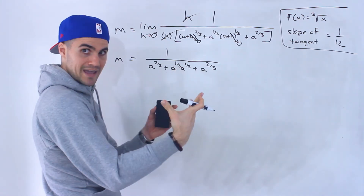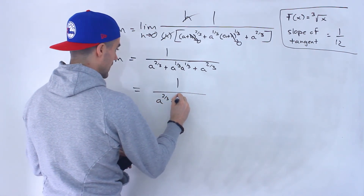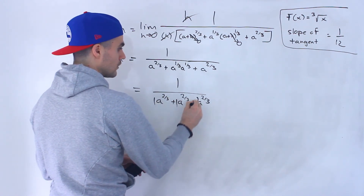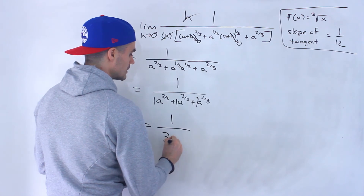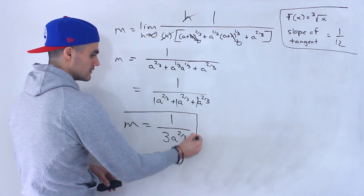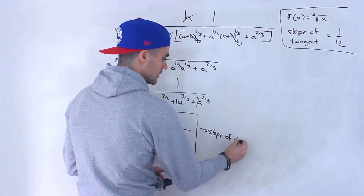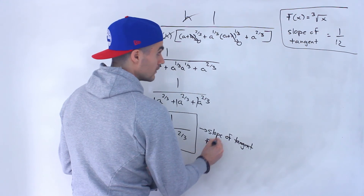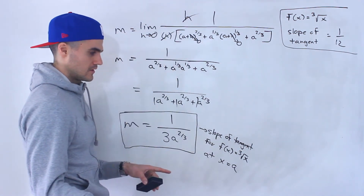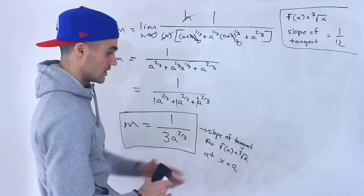Notice these two middle terms multiply with the same base — they're exponential terms — so we add the exponents: 1/3 plus 1/3 equals 2/3. So the denominator becomes a to the 2/3 plus a to the 2/3 plus a to the 2/3, which is 3 times a to the 2/3. Therefore the slope of the tangent for the function third root of x at any x value a is 1 over 3a to the power of 2/3.